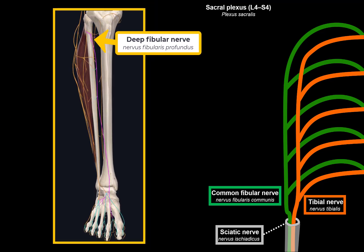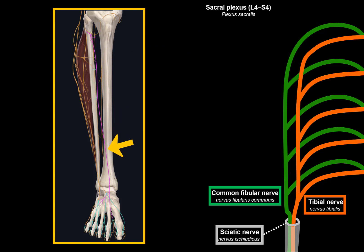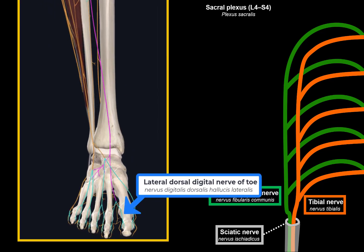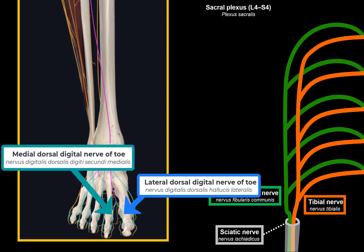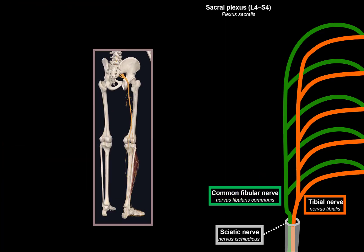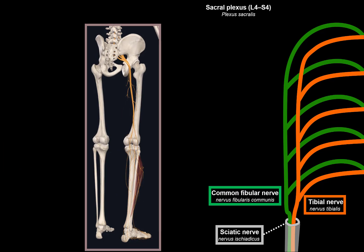The deep fibular nerve runs along the anterior side of the interosseous membrane of the leg, follows the anterior tibial artery and veins under the extensor retinaculum, and emerges on the surface of the first interdigital space. It gives off the lateral dorsal digital nerve providing somatosensory innervation for the lateral side of the first toe, and the medial dorsal digital nerve for the medial side of the second toe.